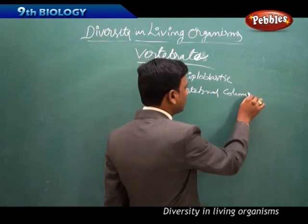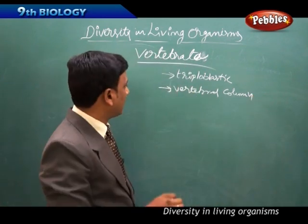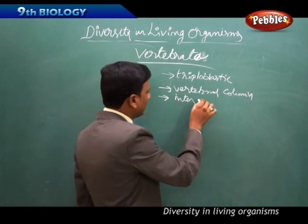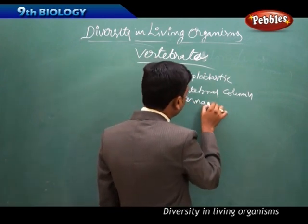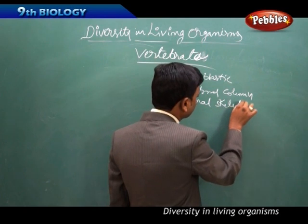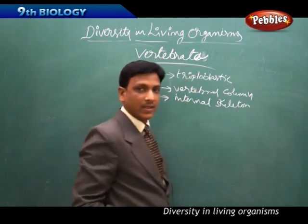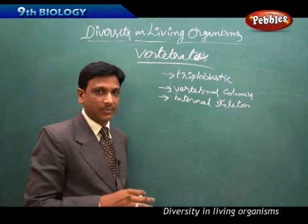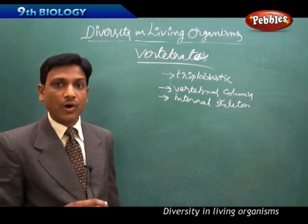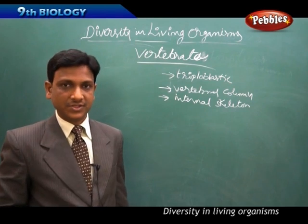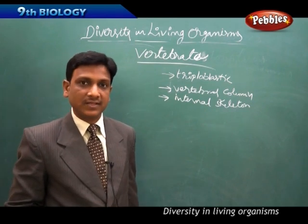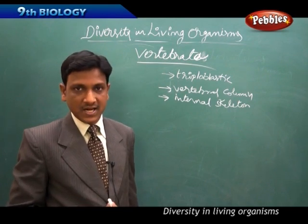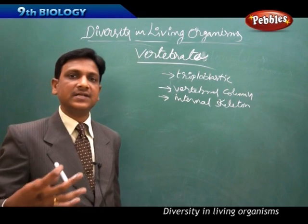Vertebrates have a true vertebral column and an internal skeleton (endoskeleton). They have extensive organ differentiation — different organs and organ systems — and the coelomic cavity is filled with organs. The differentiation of tissues is extensive, with many kinds of tissues organized throughout the body.